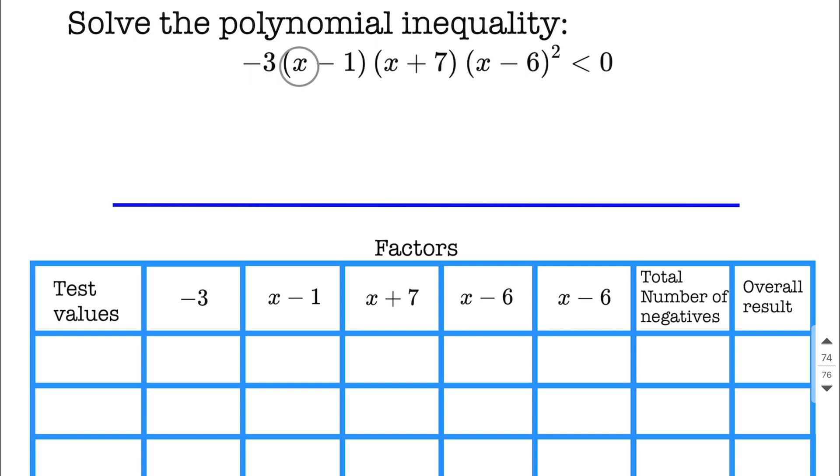But as we look forward, we have x minus 1. We can either set this equal to zero and solve that equality down, or we can just kind of visualize if we plugged in a 1 into this factor, 1 minus 1 makes zero. For the next one, x plus 7, we're going to use x equals negative 7, for negative 7 plus 7 makes zero. And finally, we get x equals positive 6.